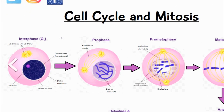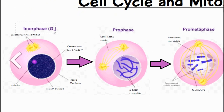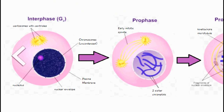Before mitosis there's a stage called interphase, where the cell basically doubles in size and there's a lot of protein synthesis. The reason this occurs is that if it didn't happen, the cell would divide and get smaller and smaller — so the cell doubles in size so that when it splits, it splits into the normal size that it should be.